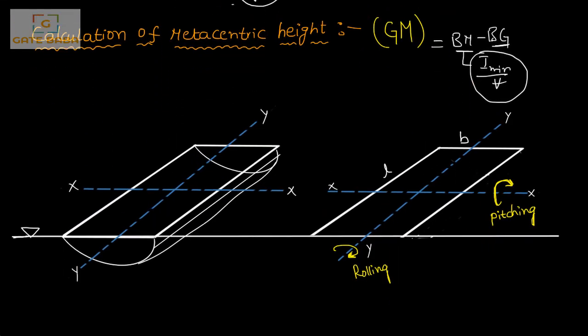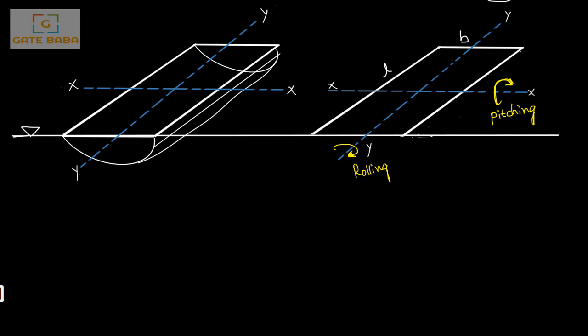Rolling is the angular deflection about the lateral/longitudinal axis (the long axis), whereas pitching is the angular deflection about the transverse axis (the short axis). Accordingly, there are two possible area moments of inertia to consider: the area moment of inertia about the transverse axis (I_xx) and the area moment of inertia about the longitudinal axis (I_yy).